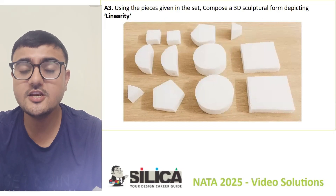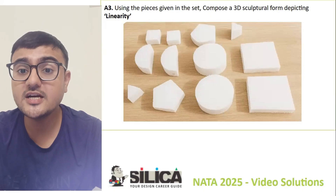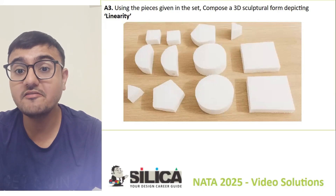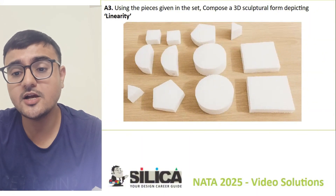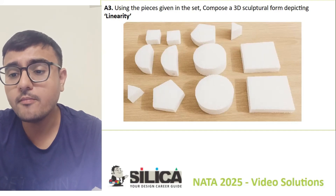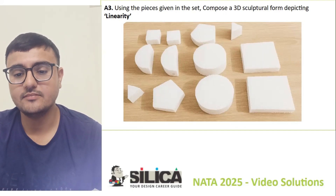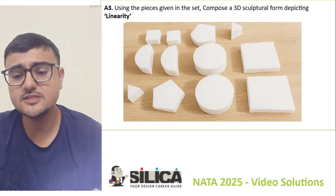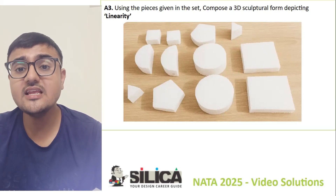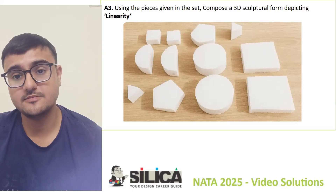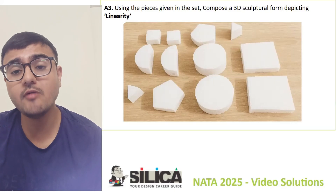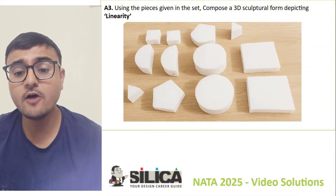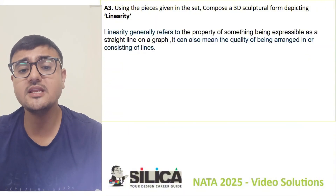Now talking about the A3 question: 3D composition using the given toolkit. The question is about using the pieces given in the set to compose a 3D sculptural form depicting linearity. You can see different 3D forms — they will give you 12 pieces, and from those 12 you have to create a composition depicting linearity. What is the meaning of linearity?